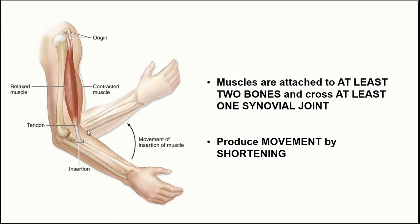When this muscle contracts, it pulls on the radius bone, because it attaches to the radius. In doing so, it flexes the forearm at the elbow joint. We can see the relaxed and contracted configurations — the muscle bulges and becomes shorter, and in doing so flexes the forearm at the elbow joint.